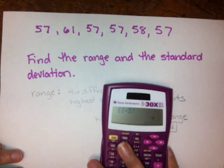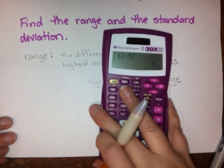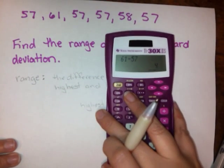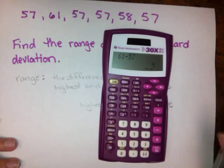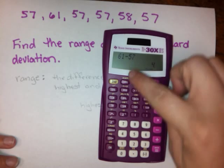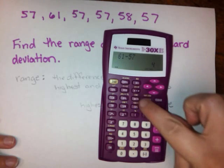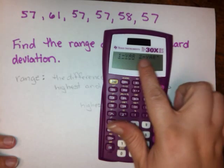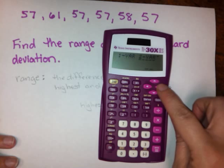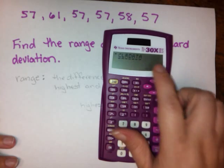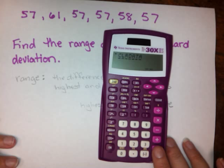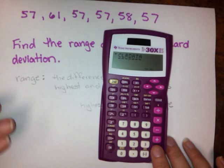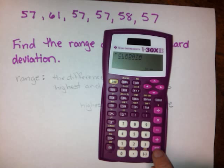So to do standard deviation in the calculator, the first thing we're going to do is go second data. And that's going to get us into our stats menu. You should see this one there, two there. And if you arrow over, you're going to see clear data. That is the first thing you need to do. In case there was any information saved in there, you want to make sure it's all gone. So we're going to hit enter when clear data is underlined. So that's the first thing that you need to do.